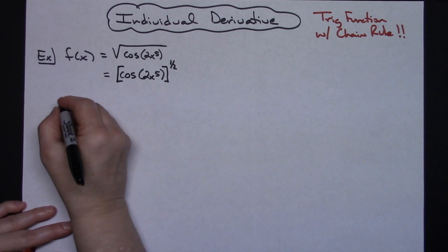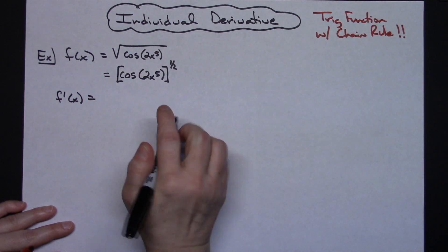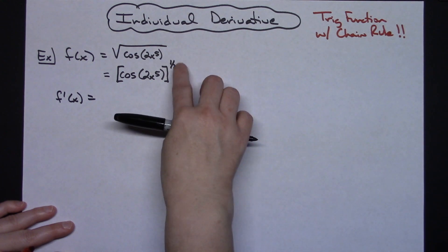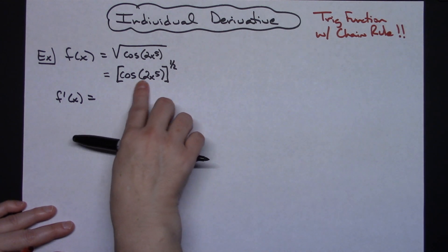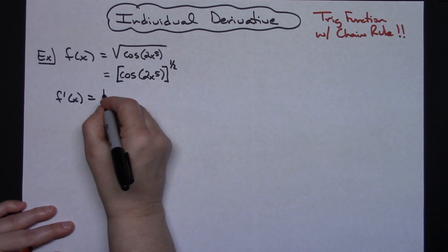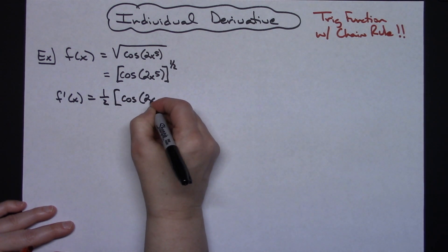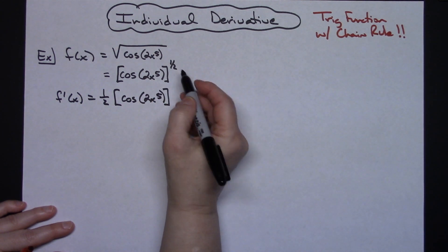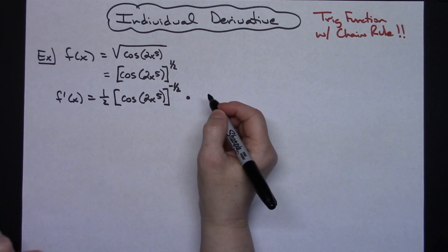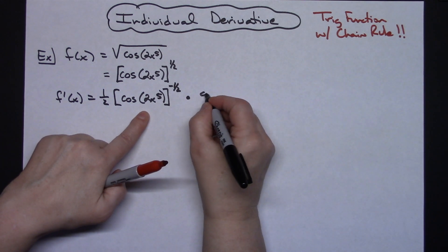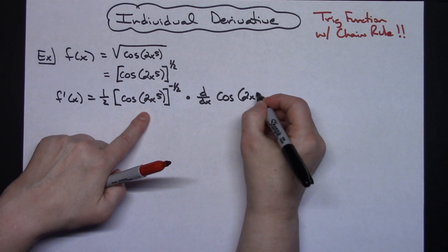Now I'm going to take my derivative, so f prime of x is going to be equal to... Here hopefully you can see this has an inside and it's being raised to a power. So I'm going to do the derivative of the outside function and I'm going to leave the inside function alone. I'm going to pull the 1 half down in front. I'm going to leave the inside alone cosine 2x to the fifth, and then when we do that we subtract 1 from the exponent so I have a negative 1 half. Now I'm going to show where the chain is going to occur. So now I'm going to have d dx of this inside function, cosine of 2x to the fifth.